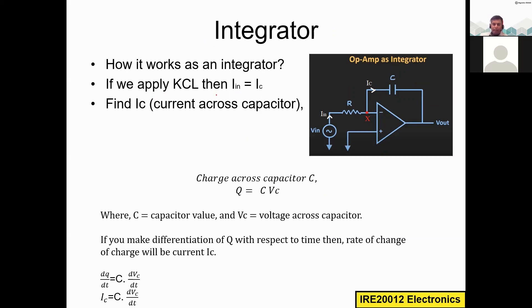We are going to apply the same rules: KCL, Kirchhoff's Current Law. We are grounding the positive input terminal, so the voltage potential there is zero. By virtual ground, Vx is also zero. Once we start the power supply, the input current i_in flows through the input resistor to the negative input terminal, and the feedback current i_c flows through the feedback capacitor. According to KCL, i_in equals i_c.